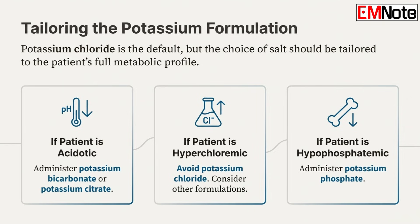Let's talk about how we deliver it — the forms and routes. We almost always default to potassium chloride. But you have to look at the patient's whole metabolic picture. If your patient is acidotic, you should be giving potassium bicarbonate or potassium citrate — it helps fix both problems at once. If the patient is also hypophosphatemic, potassium phosphate is the obvious choice. And if your patient is hyperchloremic, adding more chloride is just not a good idea.